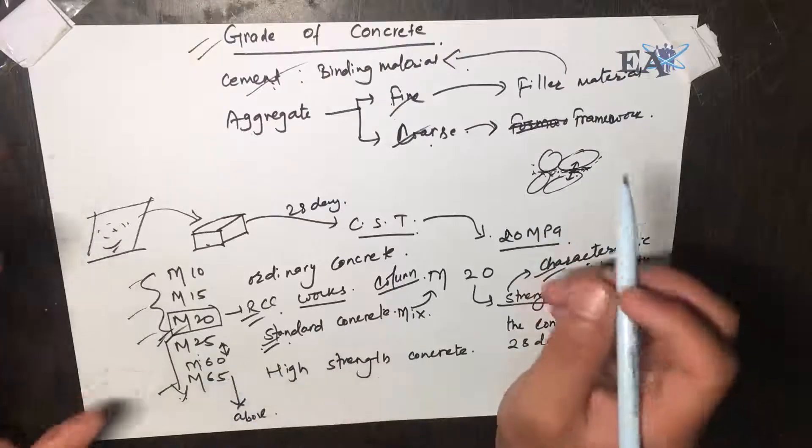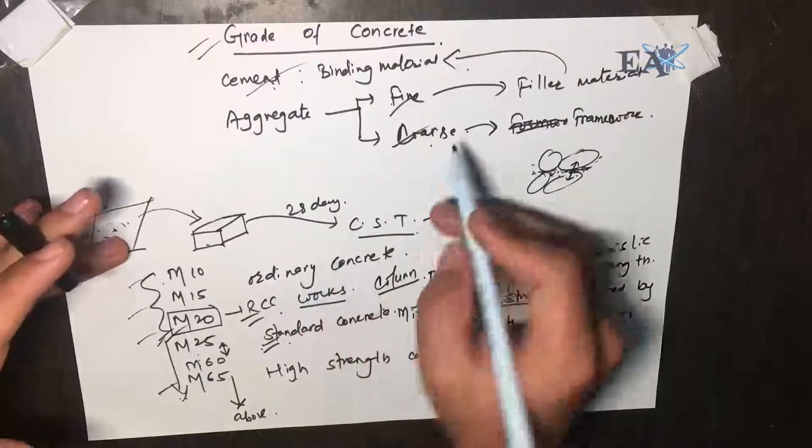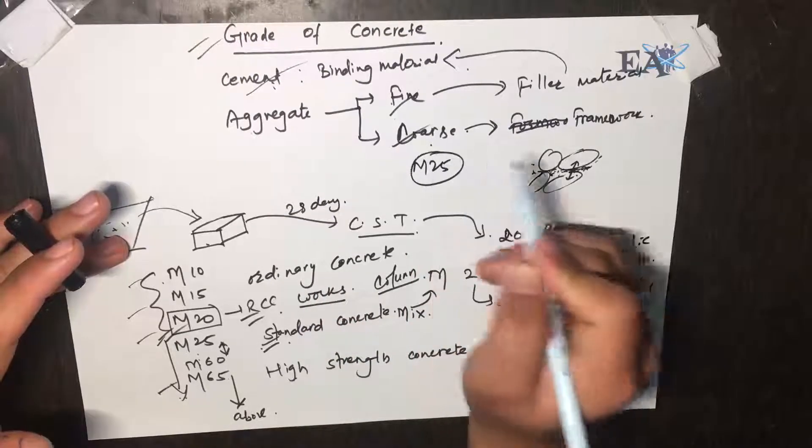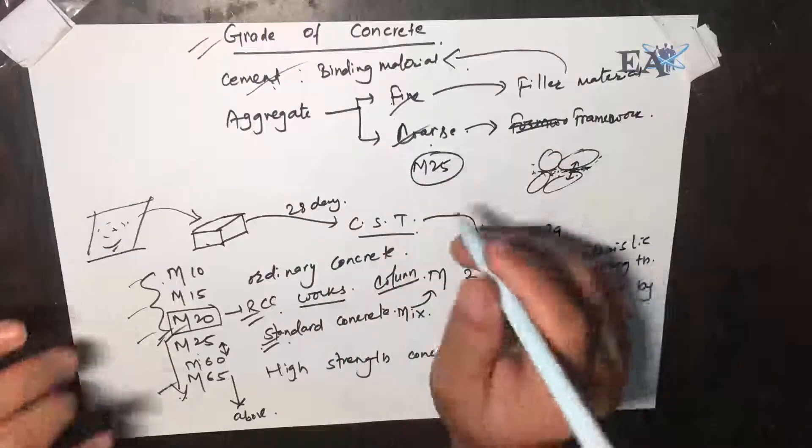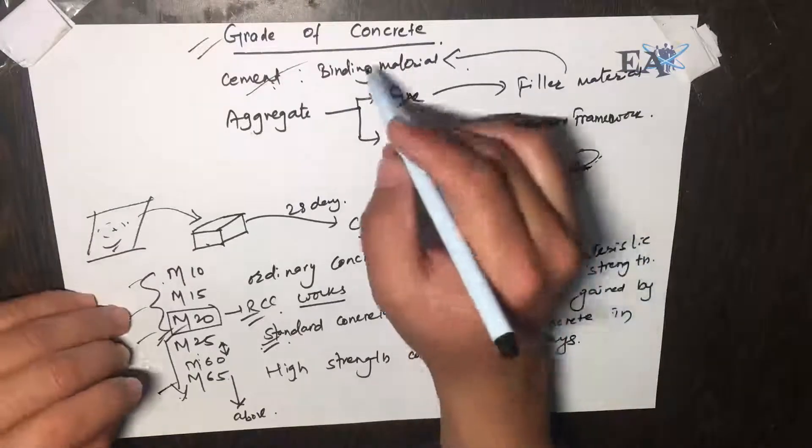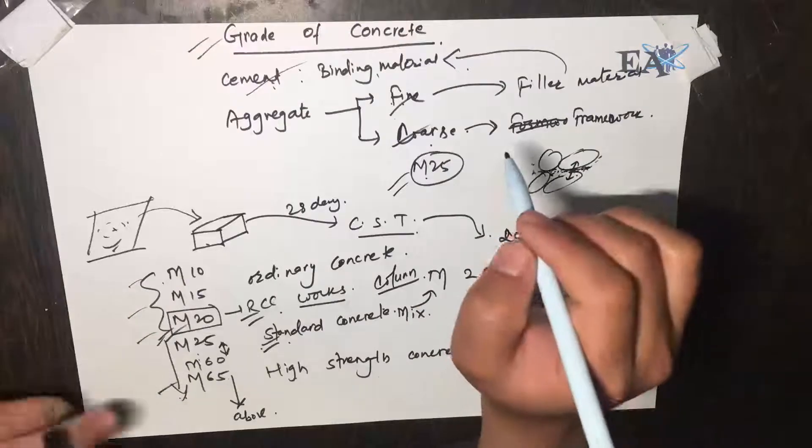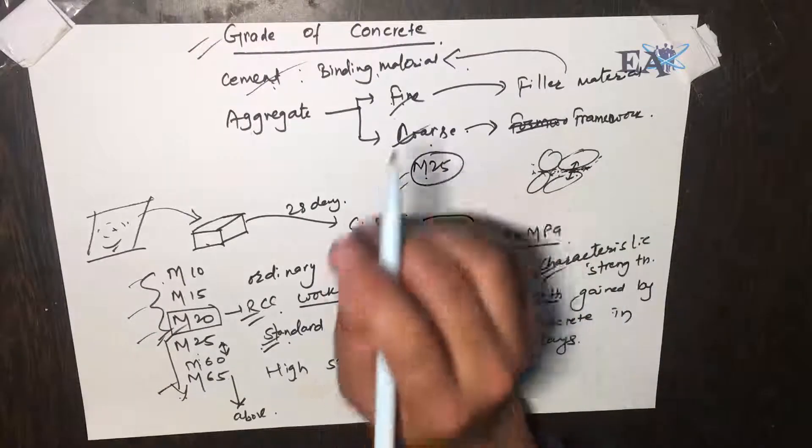So this is the meaning of the grades of concrete. In the next video we'll see—if you have to gain the strength of M25, suppose we are asked to make a concrete mix of M25, how we adopt the ratio of these three things in order to get this strength. We'll see that in the next video. Hope this video was helpful. Thank you for watching and take care.